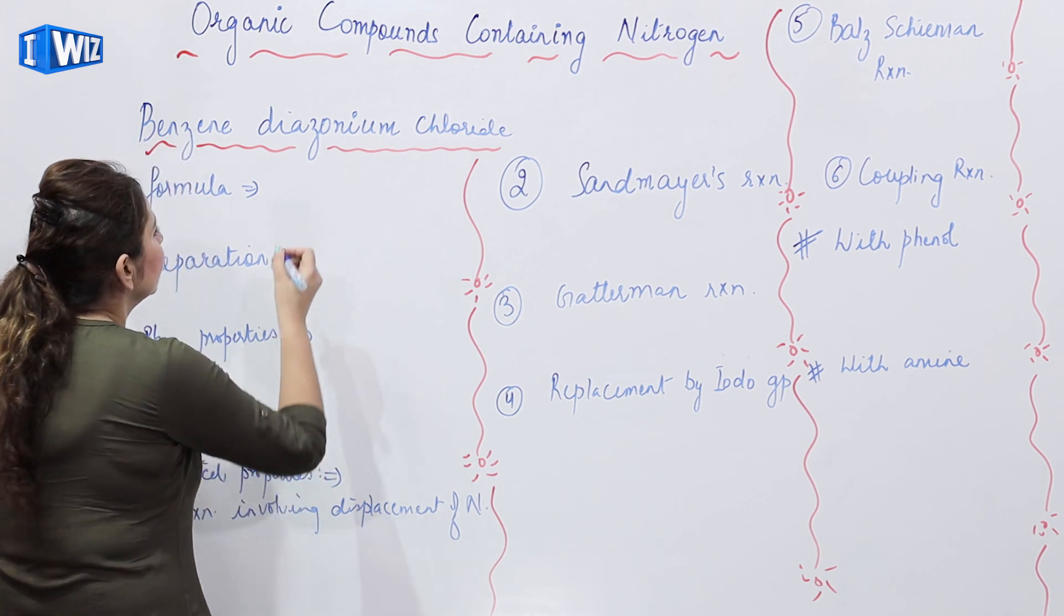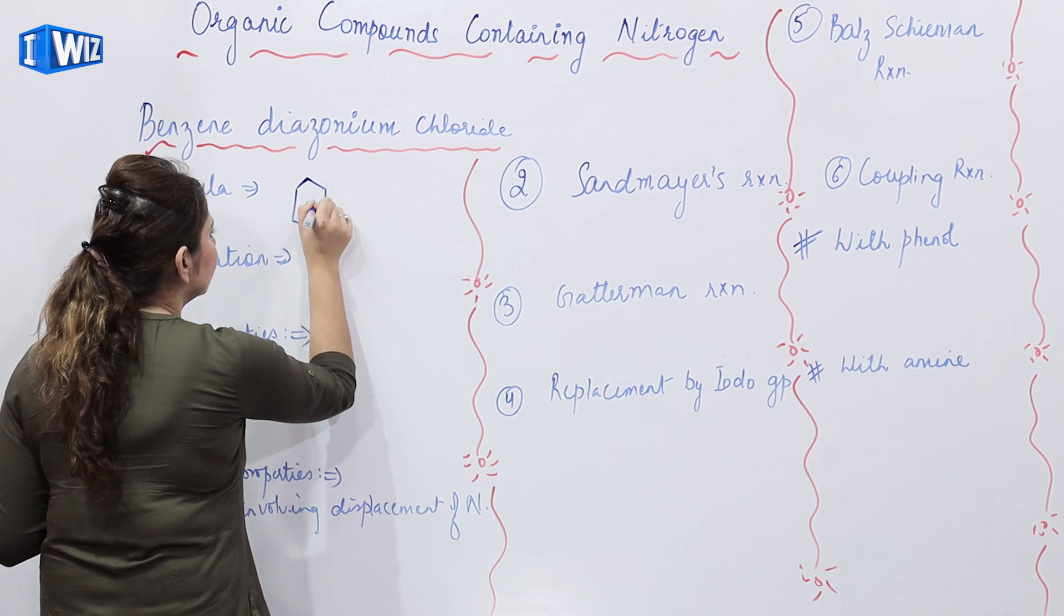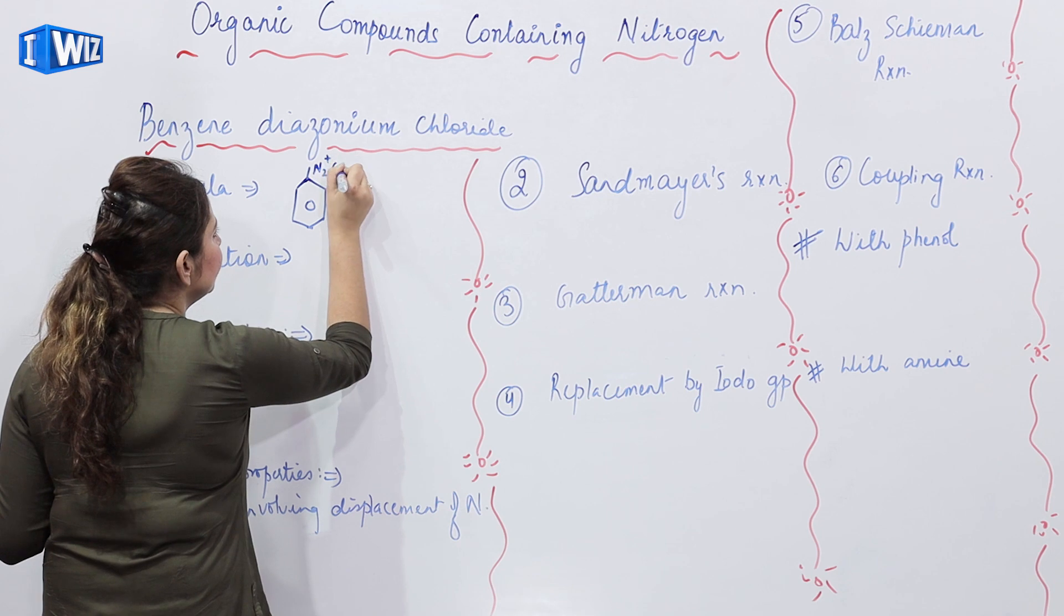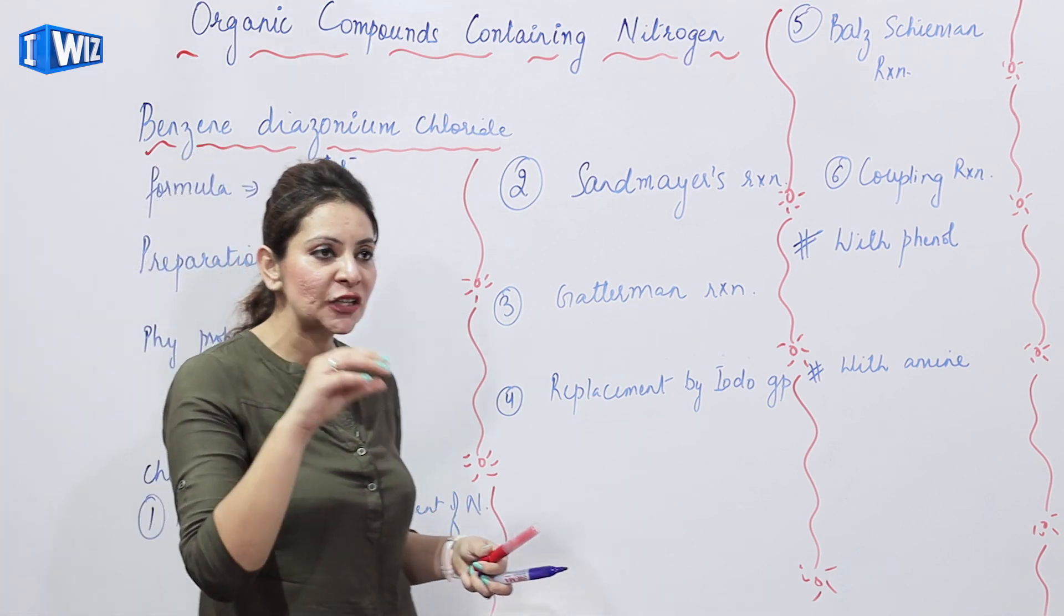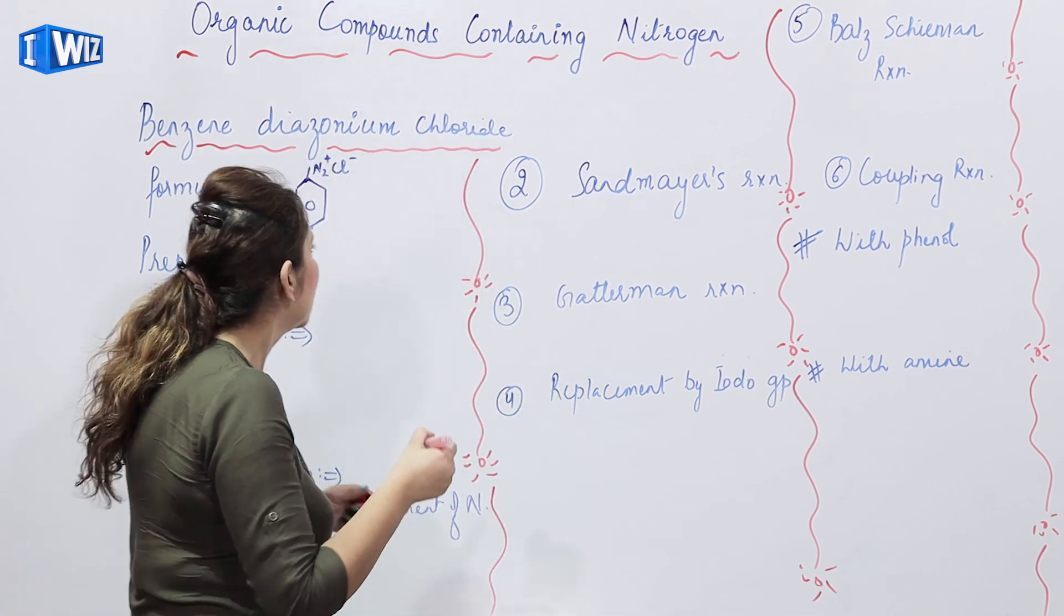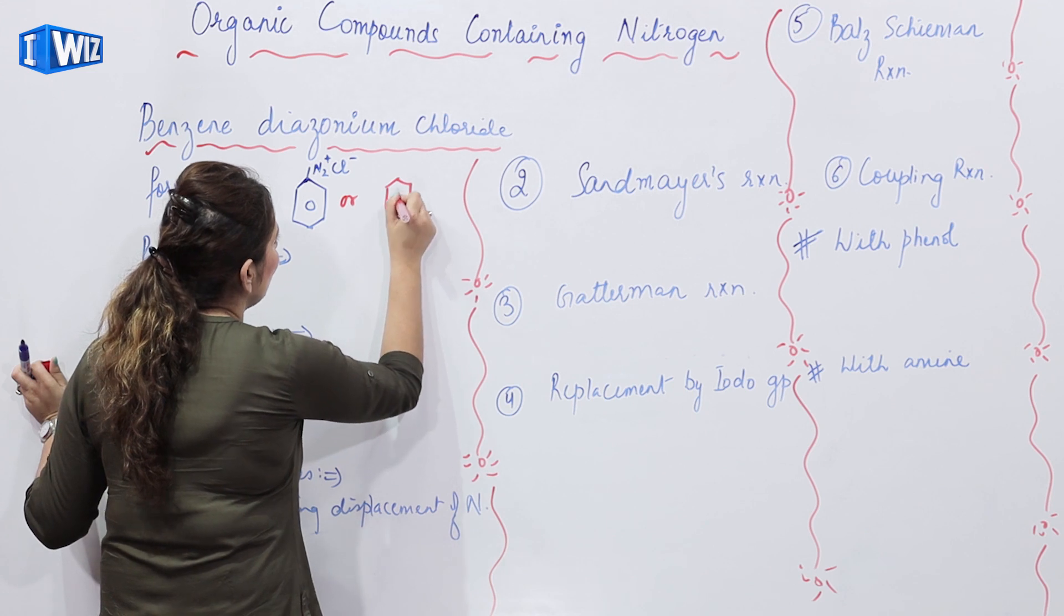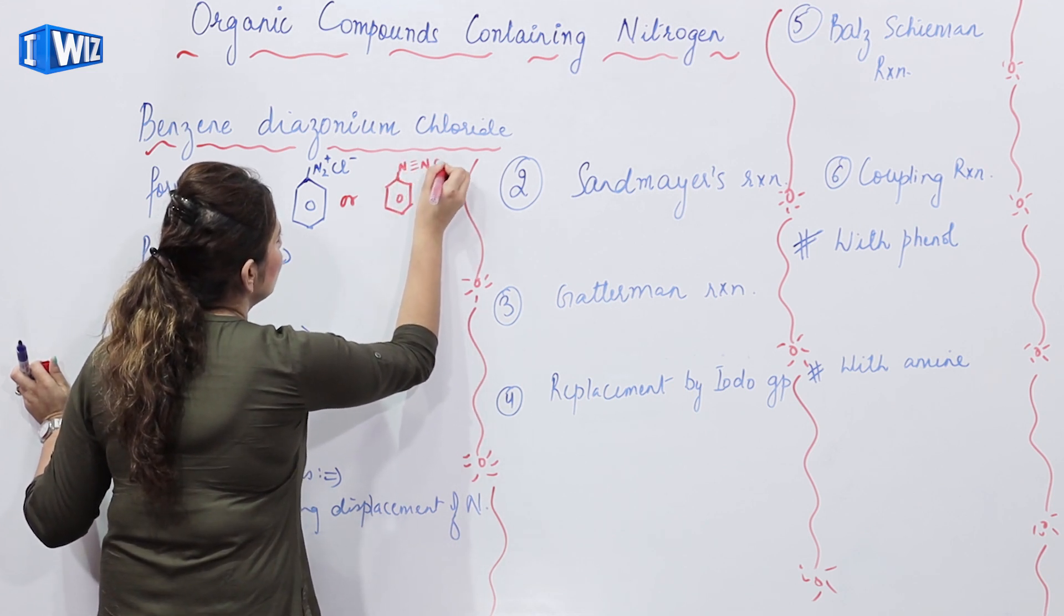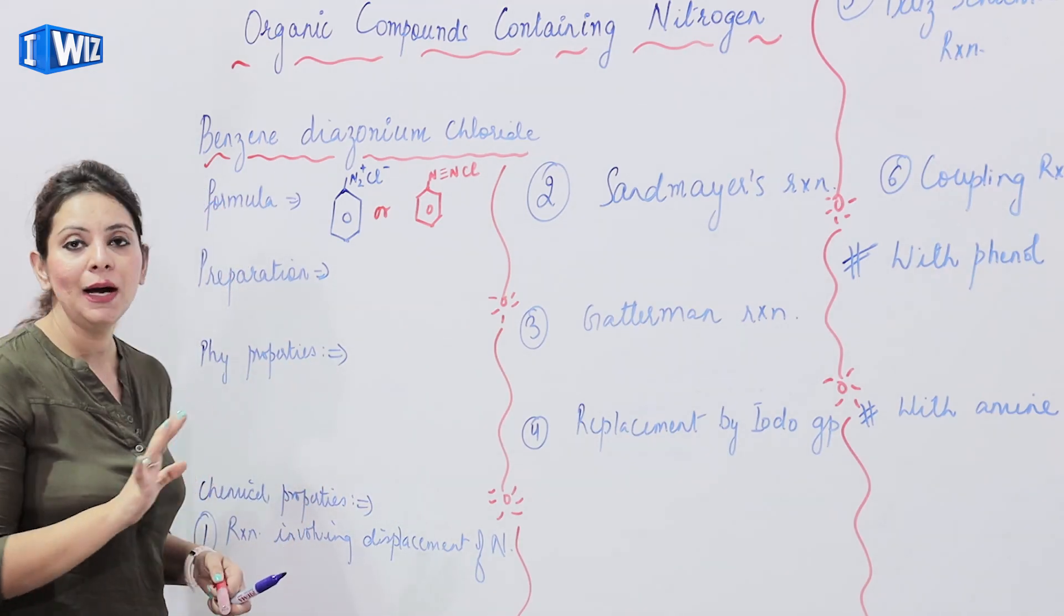Benzene Diazonium Chloride means benzene ring and on top of N2 positive and Cl negative, or N2 positive and Cl negative, we have specially indicated it. If you talk about bonding, then you can show it this way. You can also show it this way. You know that there is a triple bond in nitrogen. So this is the bonding present. This is our formula.